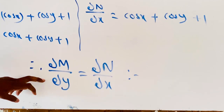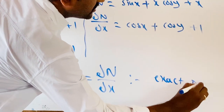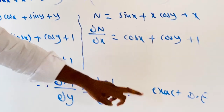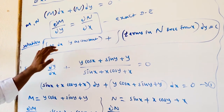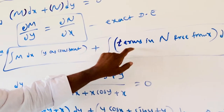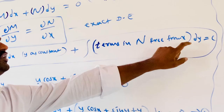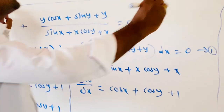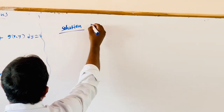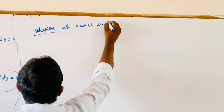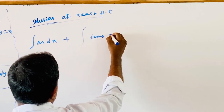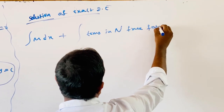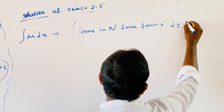Therefore, the given equation is an exact differential equation. The solution is: integral of M dx (y as constant) plus integral of terms in N free from x into dy equals c. Setting up: integral of (y cos x plus sin y plus y) dx, plus integral of terms in N free from x into dy, equals c.